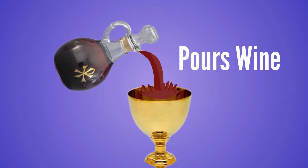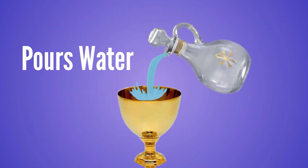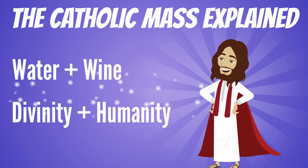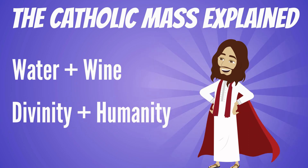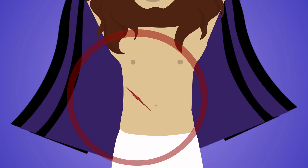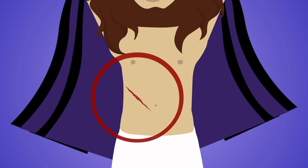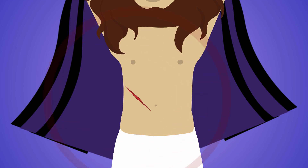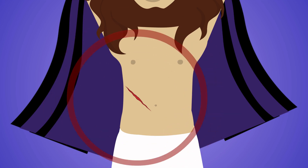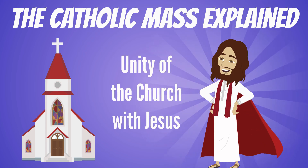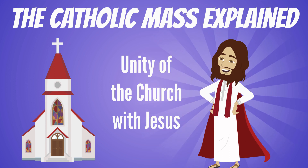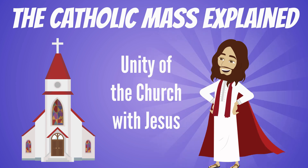Then the deacon or priest pours wine into the chalice, and a little bit of water. It's a reminder of Jesus' divinity and our humanity being mixed together. It also speaks about the blood and water which came forth from the side of Christ. When we mix it, it also symbolizes the unity of the Church with Jesus.